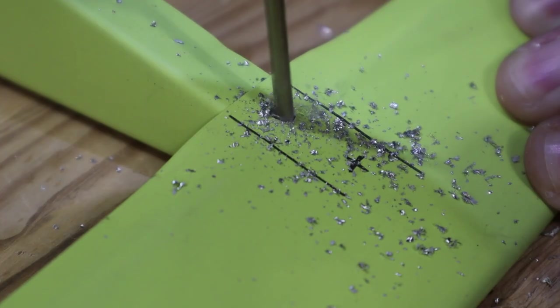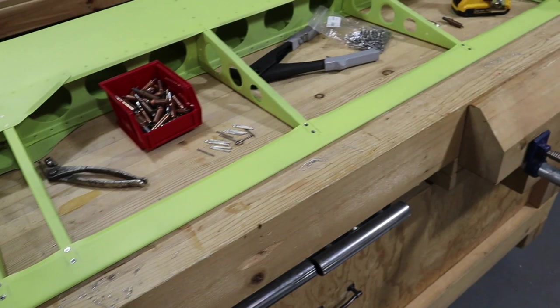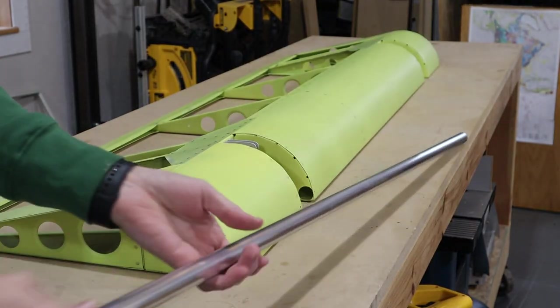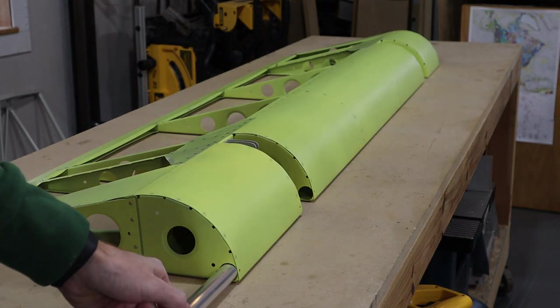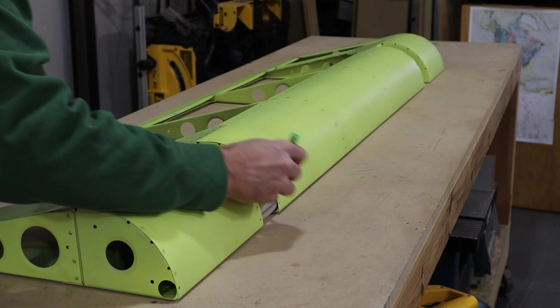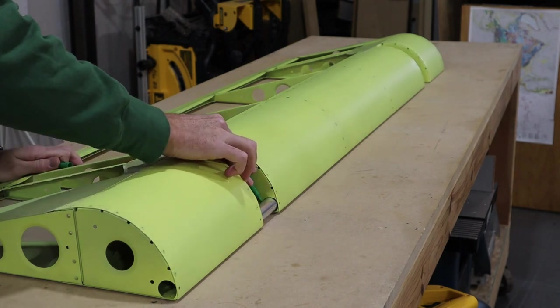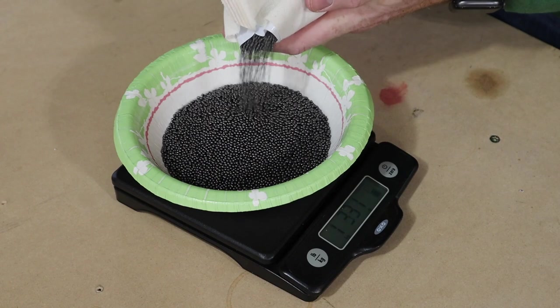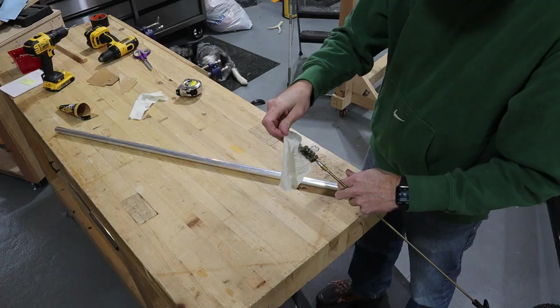We started on the ailerons. Before we cover the ailerons, we need to do a few things first. We need to rivet the trailing edge in place, then we needed to construct and install counterbalance tubes in both ailerons. We used 7/8 inch tubing and filled it with lead shot. I copied another Bearhawk builder's weight who also used Oratex for the same ailerons.